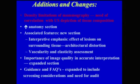The additions and changes from the previous edition include discussion on density limitations of mammography, the need for correlation with ultrasound depiction of tissue composition. There's an increased anatomy section, a new section on associated features including effect of lesions on surrounding tissue, architectural distortion, vascularity, and elasticity assessment. The importance of image quality and accurate interpretation has been expanded, along with guidance and frequently asked questions including screening considerations and the need for audit.